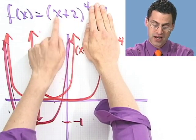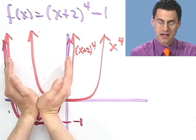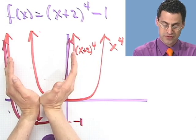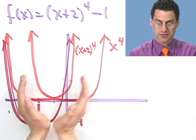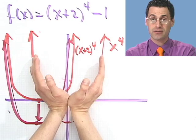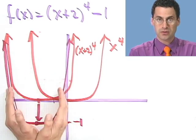This is a change in x — two units to the left, shift, shift. And then this brings me down one — shift. So it's just an easy picture that we've already seen. Chunk chunk chunk. That's all there is to it. Try some of these yourself.